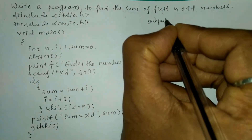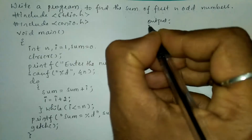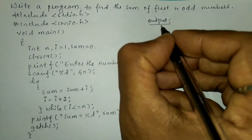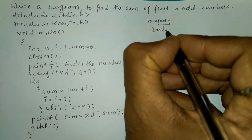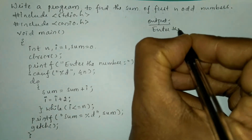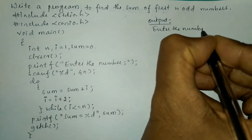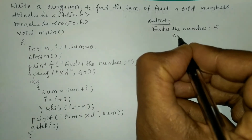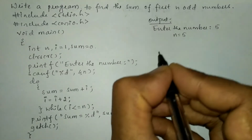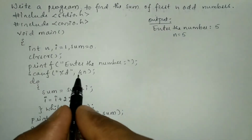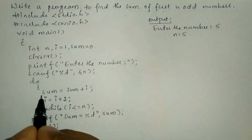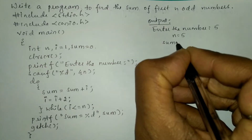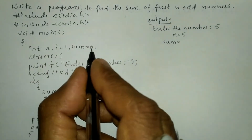Now let us take an example. Once we compile and run this program it will ask the user to enter the number. For example, I'm going to enter 5, so n is equated with value 5 just because of the scanf. Next, in the do loop: sum is equal to sum plus i — for the first time sum is set to zero.